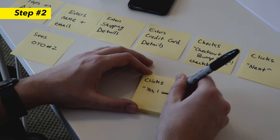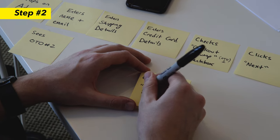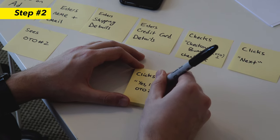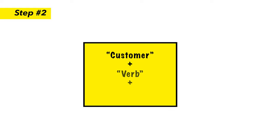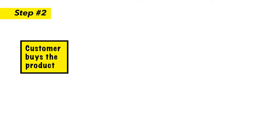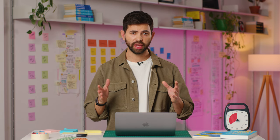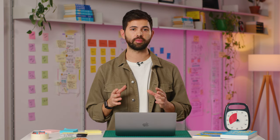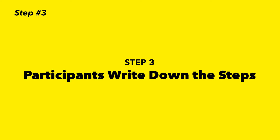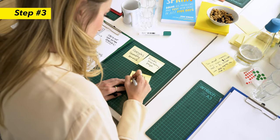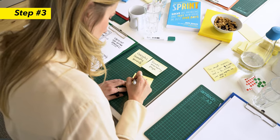You should also tell your participants to write these steps in a way where you use 'customer,' then a verb, and then what they do. So for example, 'customer buys the product,' 'customer receives an email,' 'customer learns about your product,' 'customer sees an ad.' Then set your timer to 10 minutes and ask each participant to sit on their own and write down the steps they think the customer needs to go through in that campaign.